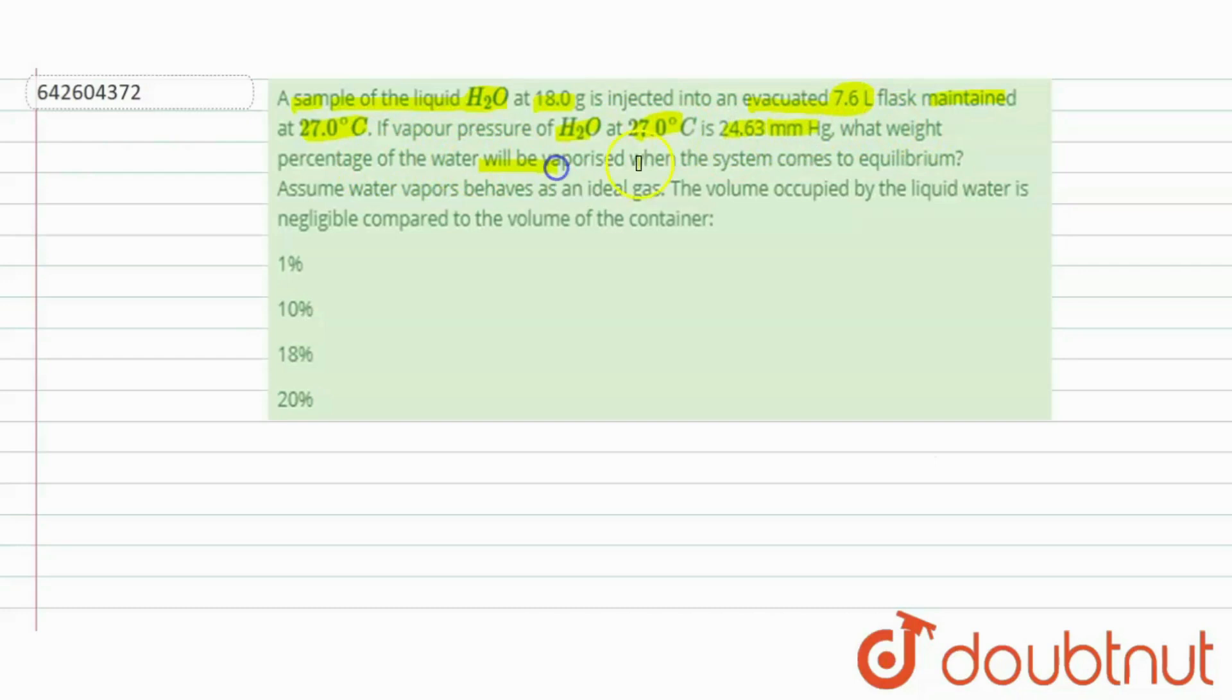Assume water vapors behave as an ideal gas. The volume occupied by the liquid water is negligible compared to the volume of container. So here it is told that water vapors behave as an ideal gas.